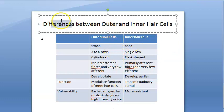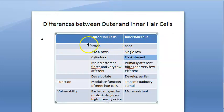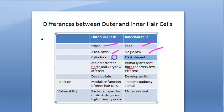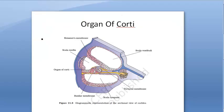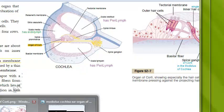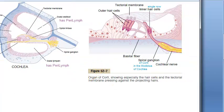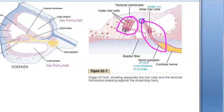Let us look at the differences between outer and inner hair cells. Outer hair cells: many in number, 3 to 4 rows. Inner hair cells: fewer in number, single row. Outer hair cells are cylindrical in shape; inner hair cells are flask-shaped. You can observe this in this diagram here.